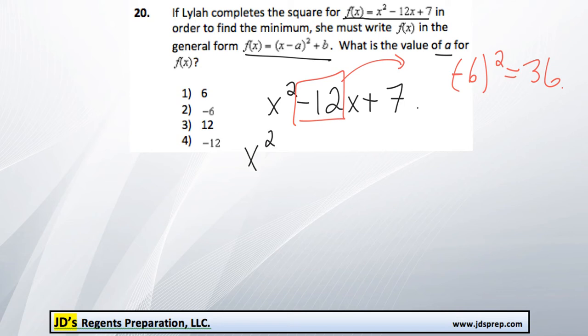That's going to help us because that is the number that we are going to both add and subtract here. Plus 36, minus 36, plus 7. We can combine these two terms together to get minus 29.